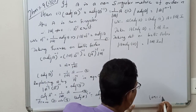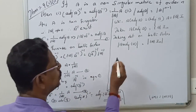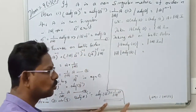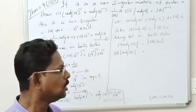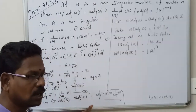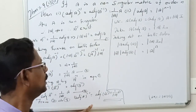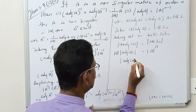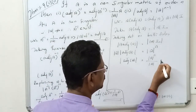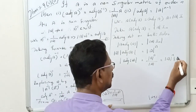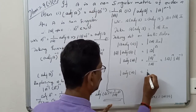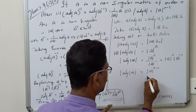We know determinant of A into determinant of adjoint of A equals determinant of A raised to the order N. The order of the matrix is N, so determinant of A equals determinant of A to the order N. Therefore, finally, determinant of adjoint of A equals determinant of A to the power N minus 1. This is Theorem 1.9 second part.